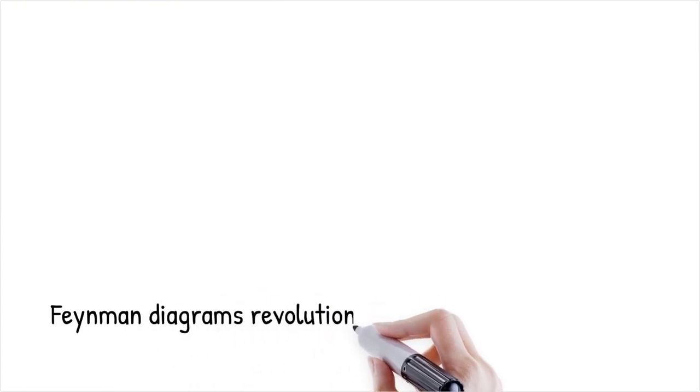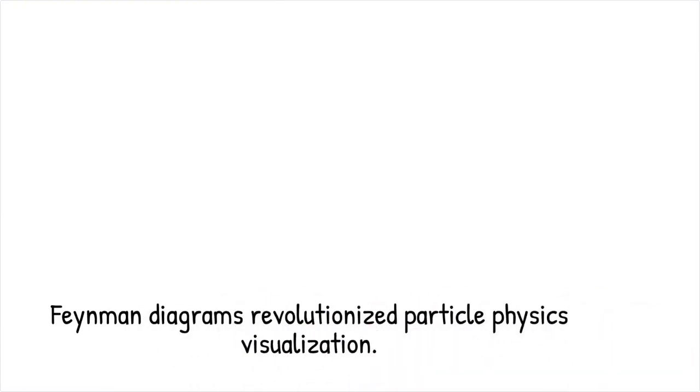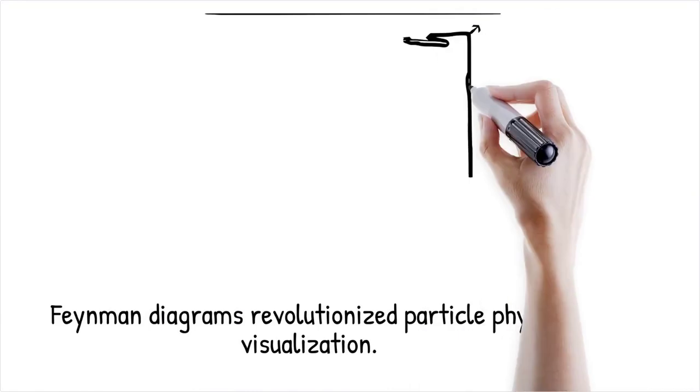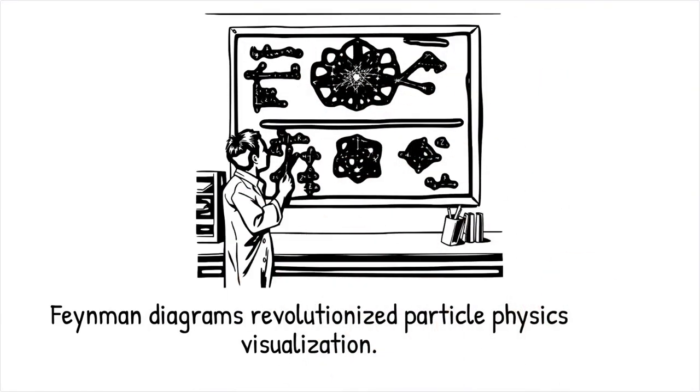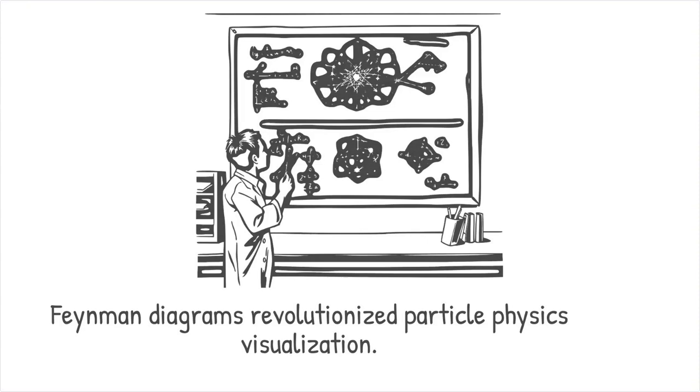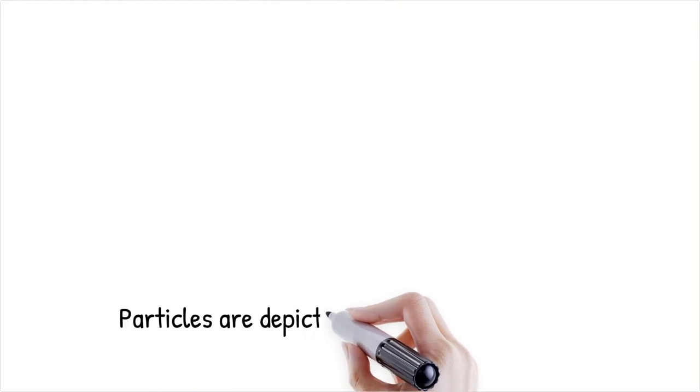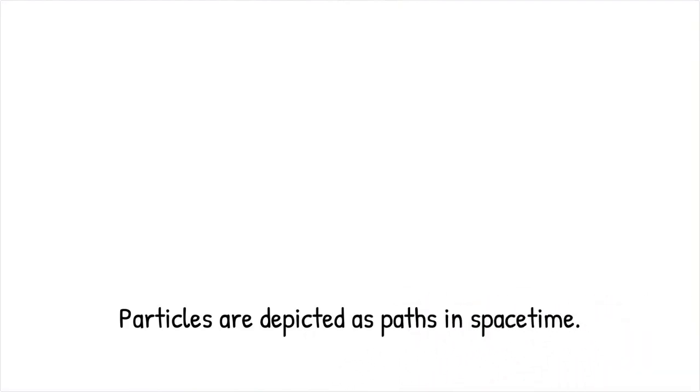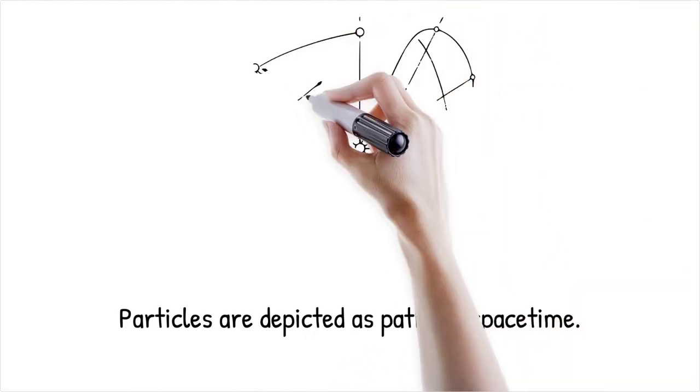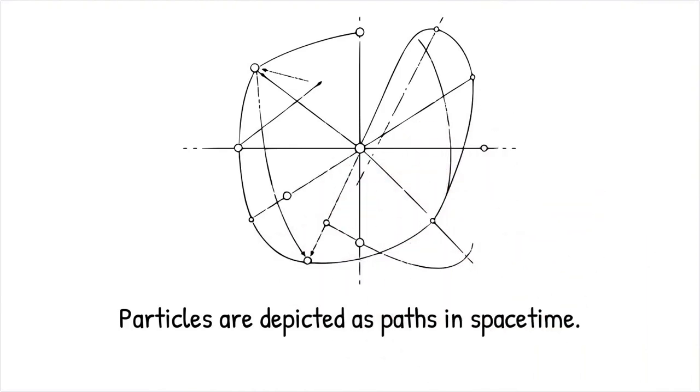Feynman revolutionized quantum physics with Feynman diagrams, a graphical notation to represent particle interactions in quantum electrodynamics, QED. These diagrams simplified the complex mathematical calculations of subatomic interactions, making quantum mechanics more intuitive and computationally feasible. By treating particles as paths in space-time, Feynman transformed how physicists approach particle physics and quantum field theory.